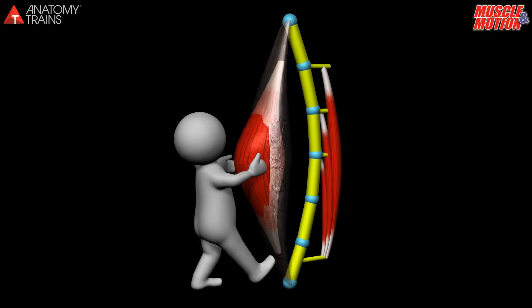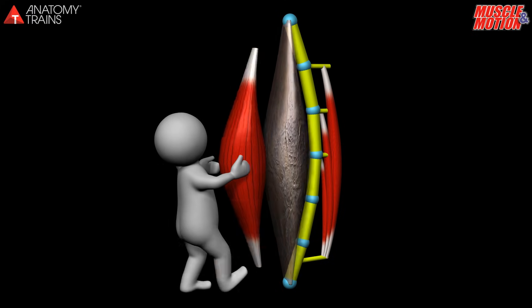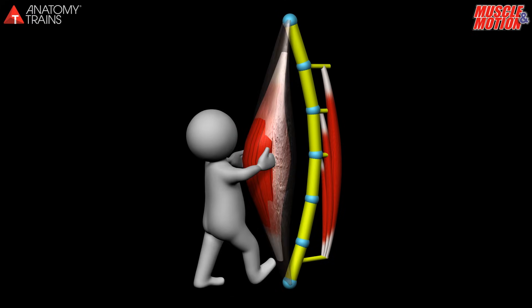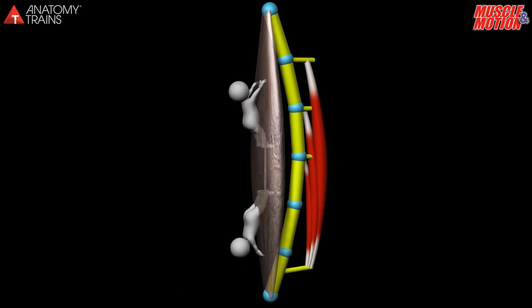Myofascial approach for forward head posture. Our muscles are built of muscle fibers and the myofascia that is wrapped around all the fibers. If we remove the muscle fiber protein, only the myofascial wrapping will remain.